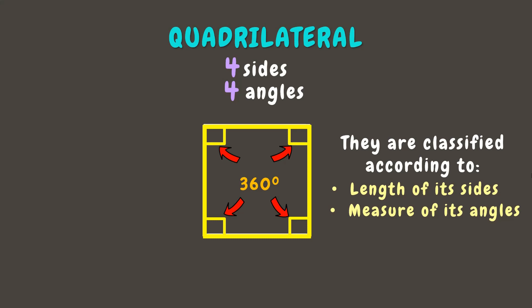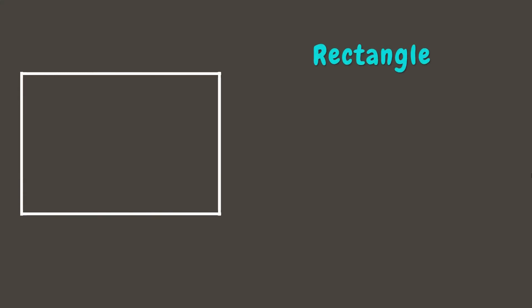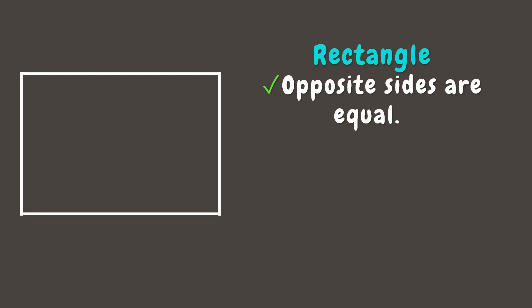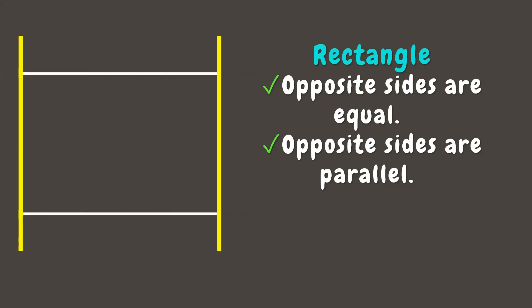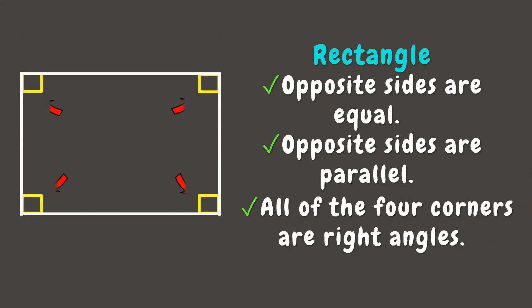First up, we have here a rectangle. A rectangle is a quadrilateral whose opposite sides are equal — one pair of opposite sides are the widths while the other ones are the lengths. We can also observe that these opposite sides are parallel to each other. Remember from our past video that parallel lines are those that do not intersect. The lengths are parallel to each other and the widths are also parallel to each other. And lastly, all four corners are right angles.